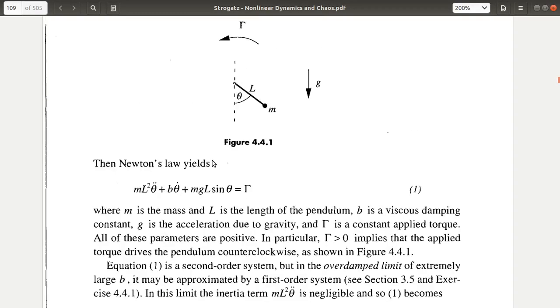What is this MgL? MgL is the maximum torque exerted due to the weight at this point. And if that torque is less than this gamma, which is the applied torque, then this torque can overcome this weight and it can have a complete rotation.